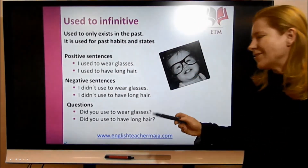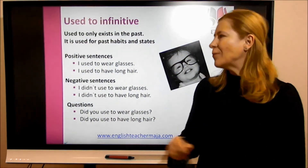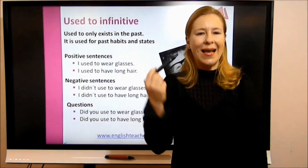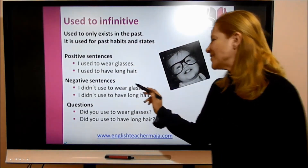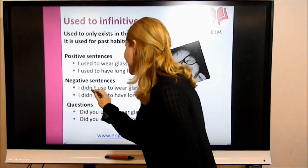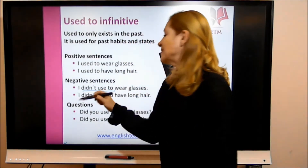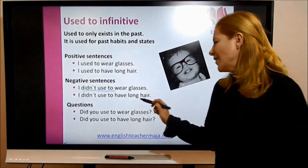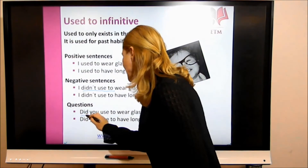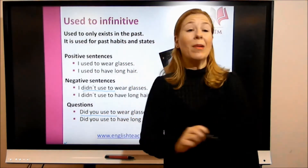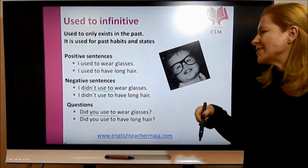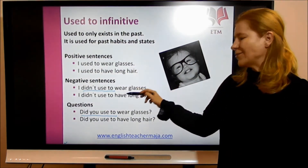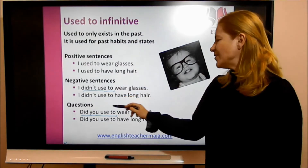Now let's concentrate on the form. In positive sentences it's 'used to' plus infinitive. In negative sentences it's 'didn't use to' plus infinitive. In questions it's 'did you use to' plus infinitive. Examples: 'I didn't use to wear glasses.' 'I didn't use to have long hair.' 'Did you use to wear glasses?' 'Did you use to have long hair?'